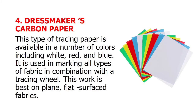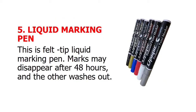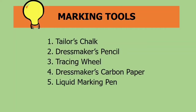Dressmaker's carbon paper: this type of tracing paper is available in a number of colors including white, red, and blue. It is used in marking all types of fabric in combination with a tracing wheel, and works best on plain, flat surface fabrics. Lastly, the liquid marking pen: a felt-tipped liquid marking pen; marks may disappear after 48 hours and the other type washes out. Once again, the different marking tools are tailor's chalk, dressmaker's pencil, tracing wheel, dressmaker's carbon paper, and liquid marking pen.